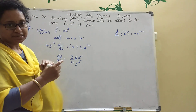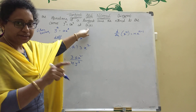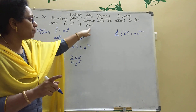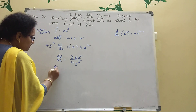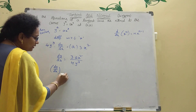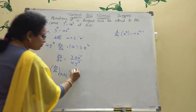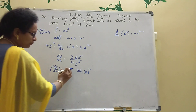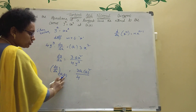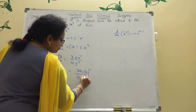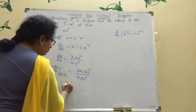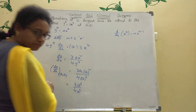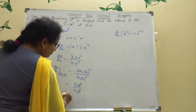At point (a, a), apply the formula. dy/dx = 3a·(a²) / (4·a³) = 3a³ / 4a³. Cancel a³ from numerator and denominator. The answer is 3/4. So slope m = 3/4.